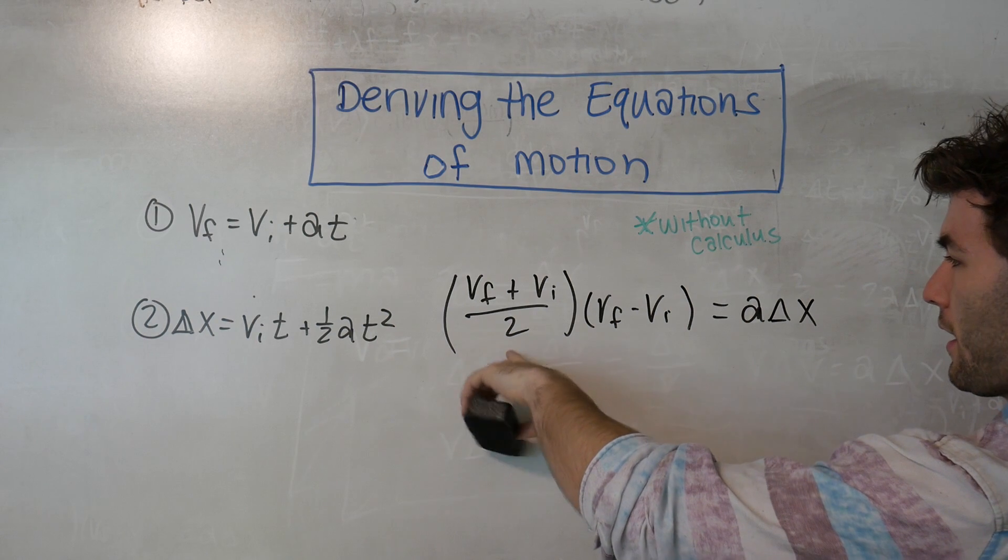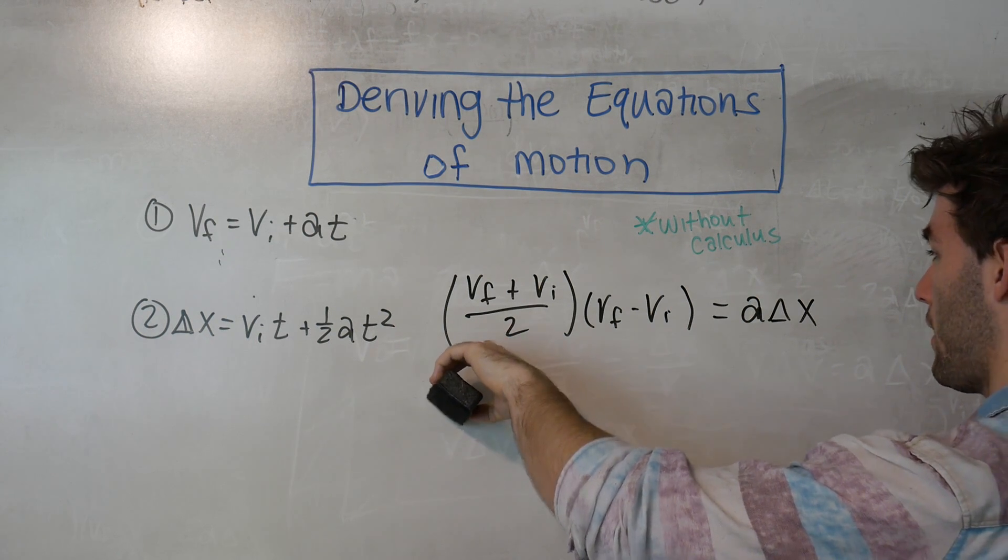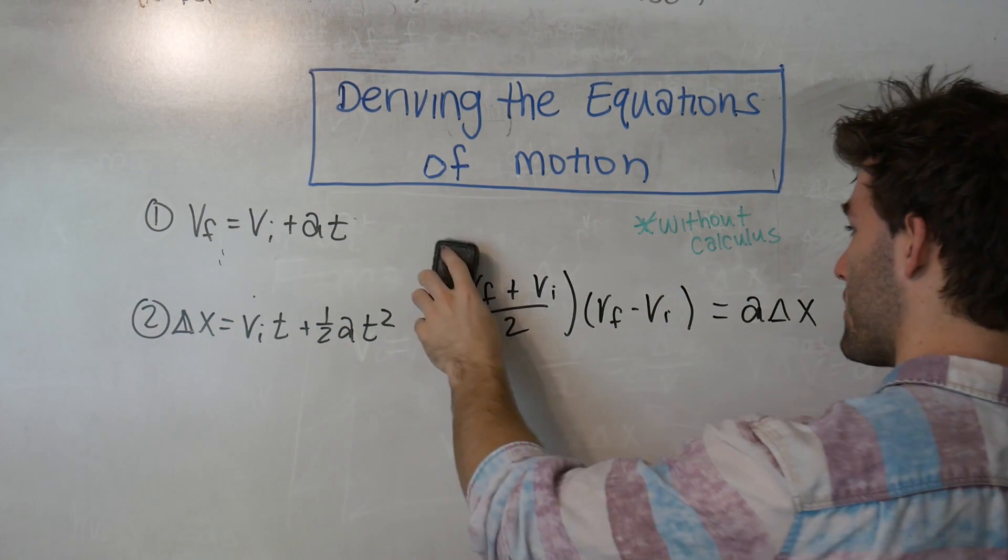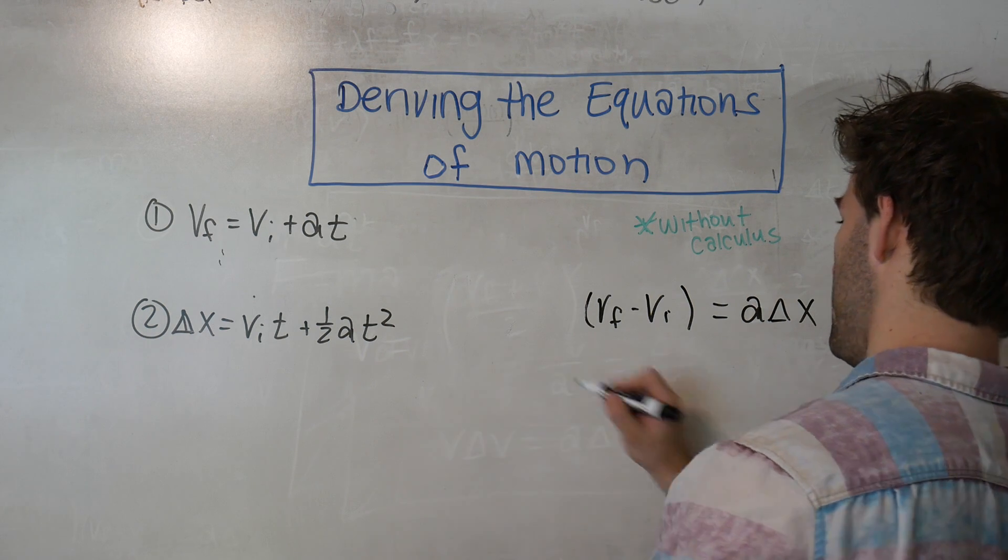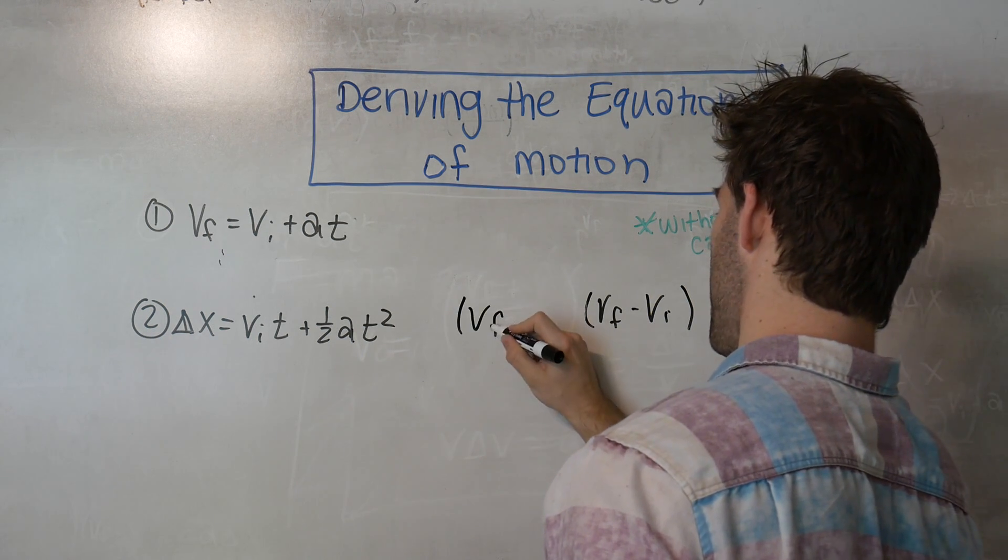We can go ahead and distribute that one-half over to the right-hand side so that we don't have to deal with fractions. And this becomes VF plus VI.